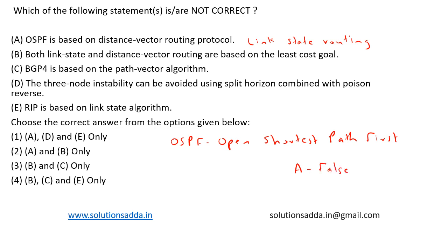From this we can eliminate some other options: option 3, because it says B and C only, as well as option 4, B, C, and E only — these can also be eliminated. Now let's see option B: both link state and distance vector routing are based on least cost. This statement is true — both are indeed based on least cost. So option B is true.